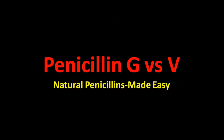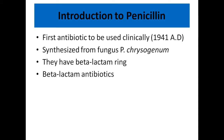Today we'll be discussing penicillin G and penicillin V. Penicillin is the first antibiotic to be used clinically, and it has been in use since 1941 AD. It was initially synthesized from a fungus, but now it is produced artificially. This antibiotic has a beta-lactam ring, so it falls under the beta-lactam antibiotics.